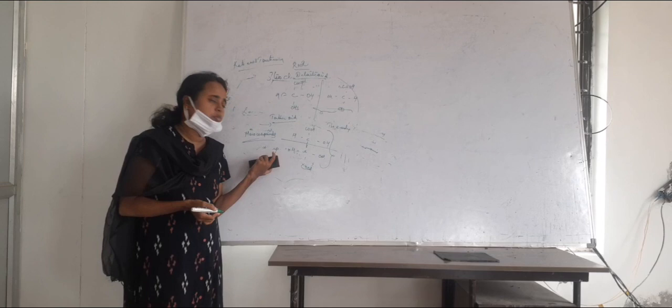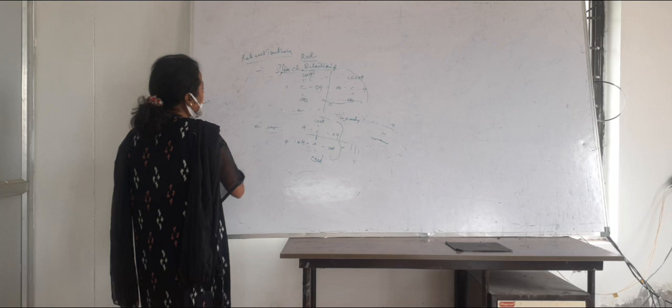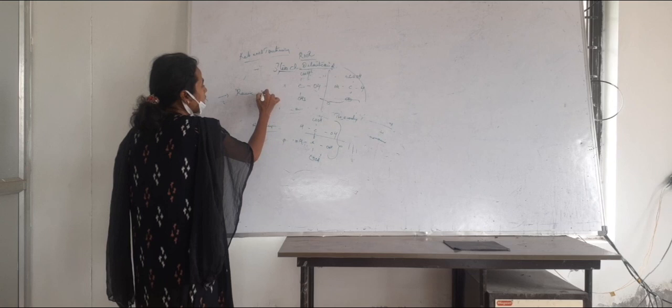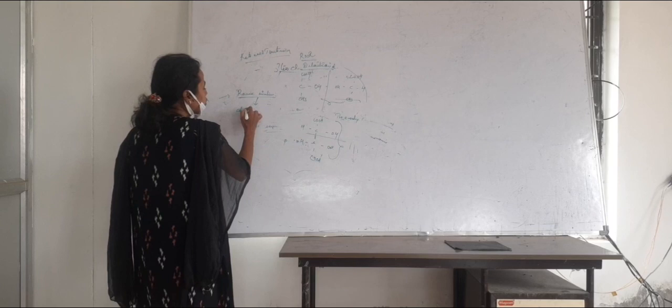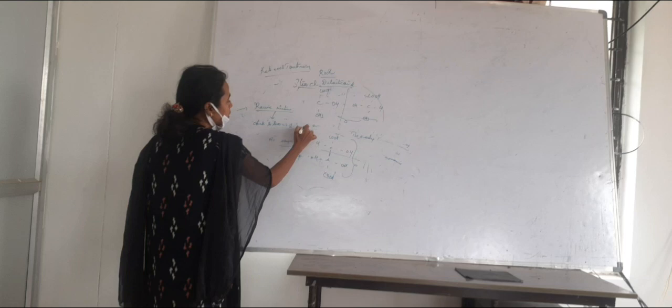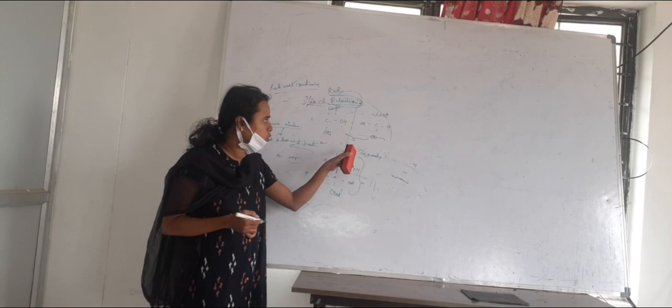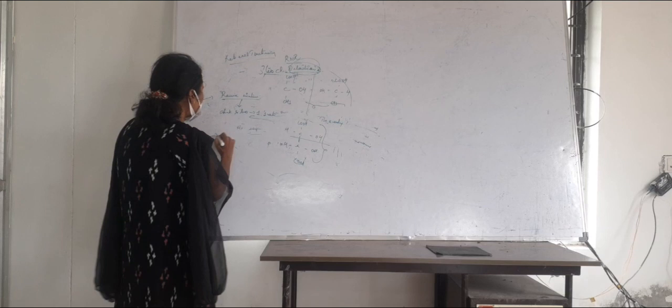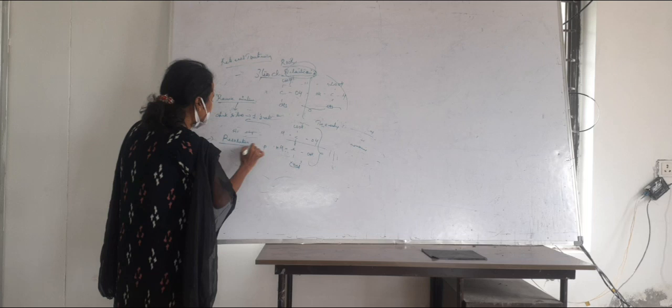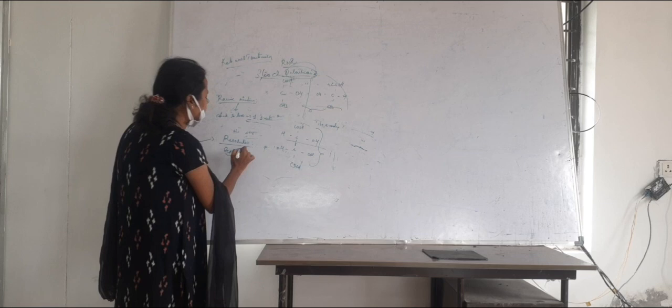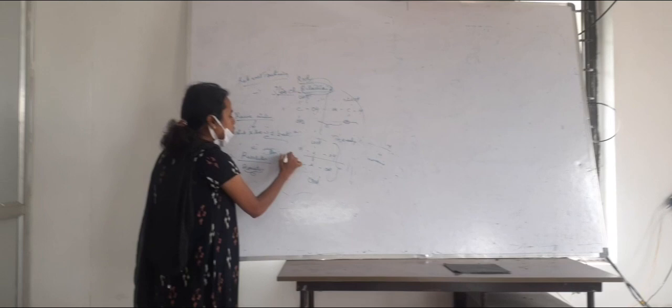A racemic mixture is a mixture consisting of both dextrorotatory and laevorotatory forms in a 1:1 ratio. For example, dextrorotatory lactic acid and laevorotatory lactic acid existing in a 1:1 ratio form a racemic mixture. Resolution is the separation of a racemic mixture into its individual enantiomers — separating dextrorotatory and laevorotatory lactic acid is known as resolution.